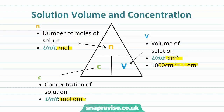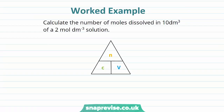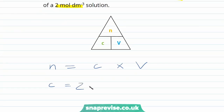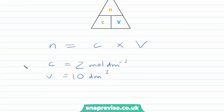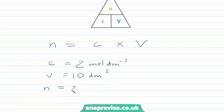Now we've had a brief look at the equation, let's have a look at a worked example together. Calculate the number of moles dissolved in 10 decimetres cubed of a 2 mole per decimetre cubed solution. We want to work out N, so the number of moles is equal to the concentration multiplied by the volume. The concentration is 2 moles per decimetre cubed and the volume is 10 decimetres cubed, so the number of moles equals 2 multiplied by 10, giving us 20 moles.